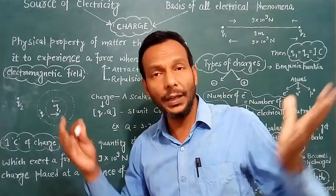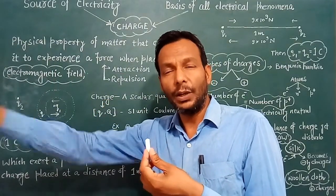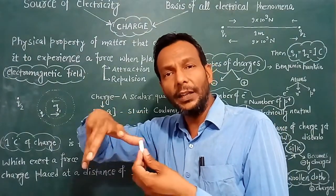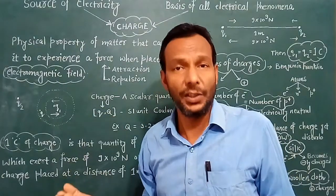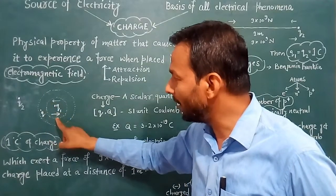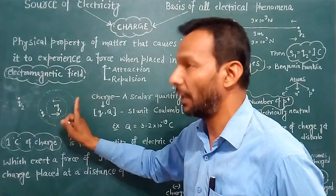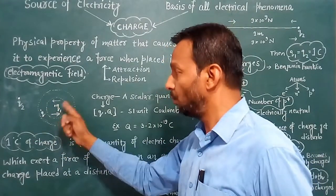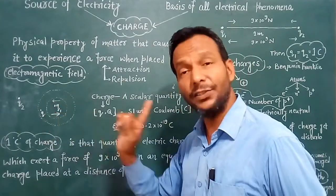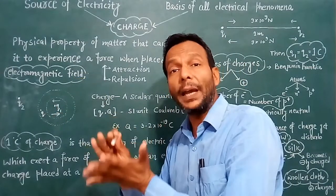To experience a force. The circle shown here represents the electrical field influence of the charge. When this charge comes into motion, a magnetic field is generated. When this charge is stationary, an electrical field is generated. When the charge comes into motion, a magnetic field is generated. And when we combine these two fields, an electromagnetic field is generated.